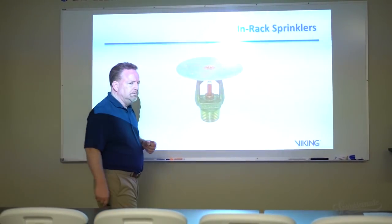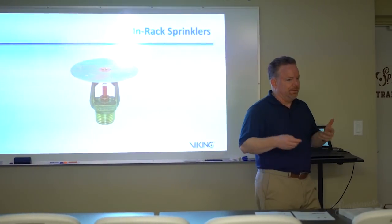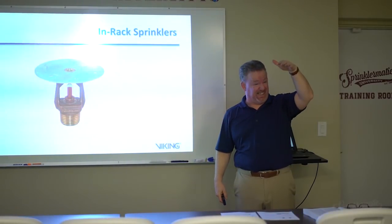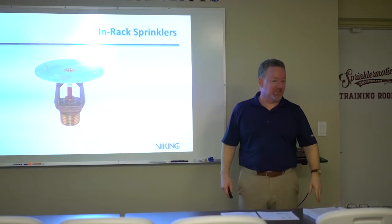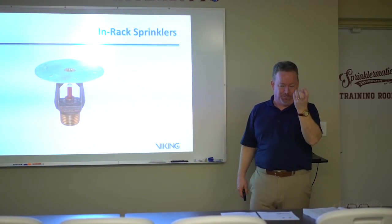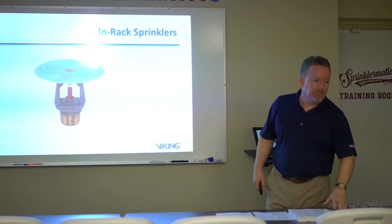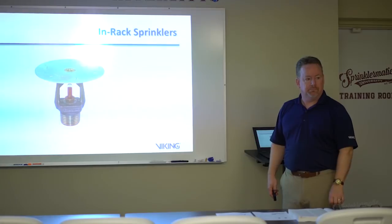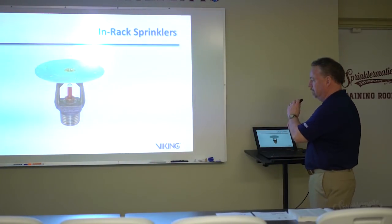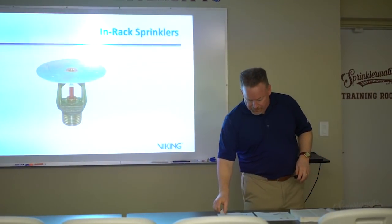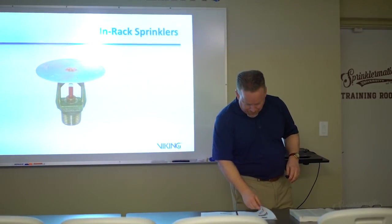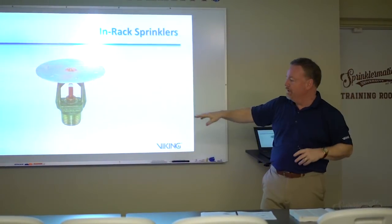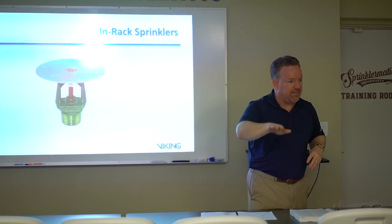A good example of custom color matching was a gothic cathedral at Yale University with a kelly green ceiling — the sprinklers are completely invisible because the color was perfectly matched. Viking can do exact color matching for any specific wall or ceiling color with some additional lead time. The last type of sprinkler to discuss before moving on to other system components is the in-rack sprinkler.